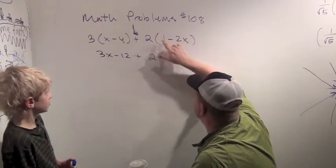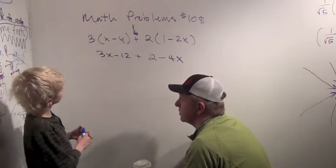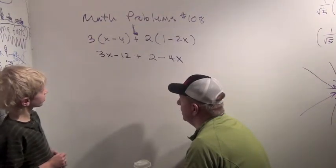Yeah. And three times this is three x minus twelve. Two times that is two times one minus four x. Okay, awesome. So now all you have to do is add this. How will we do that?